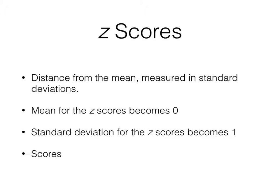Notice that z-scores, it's a lowercase letter and it's italicized. Keep in mind, this is the part that I want you to understand. A z-score is measuring the distance from the mean that that raw score is, and it's measured in standard deviations. The mean for all of the z-scores in a data set becomes 0, and the standard deviation for the z-scores is 1.